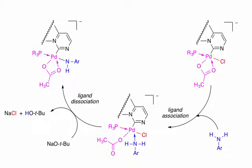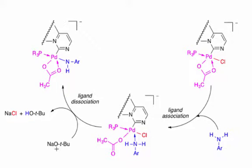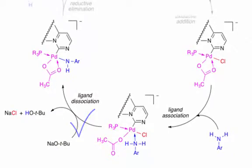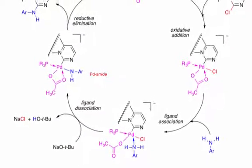This amine-palladium complex is then deprotonated by sodium tert-butoxide acting as a Bronsted base, resulting in dissociation of chloride and formation of the palladium-amide ligand.